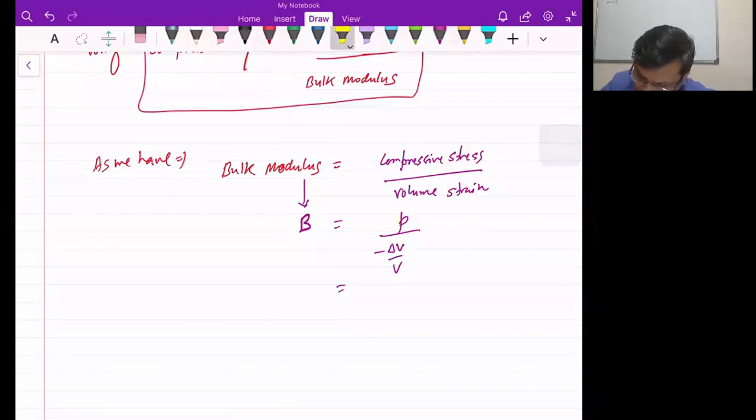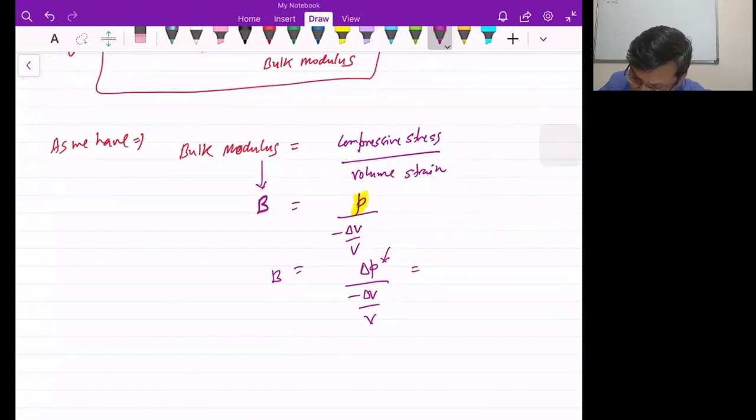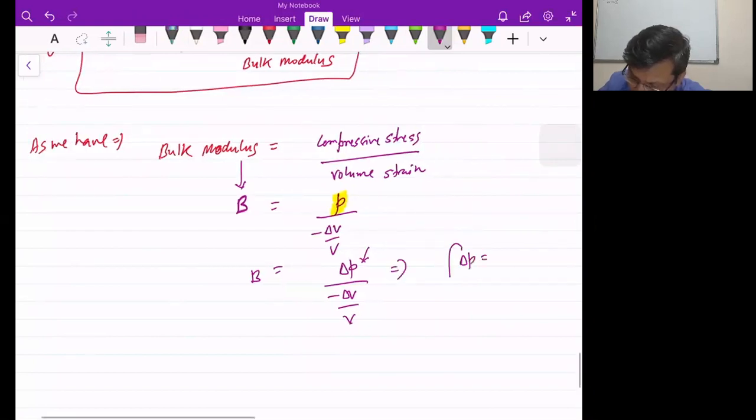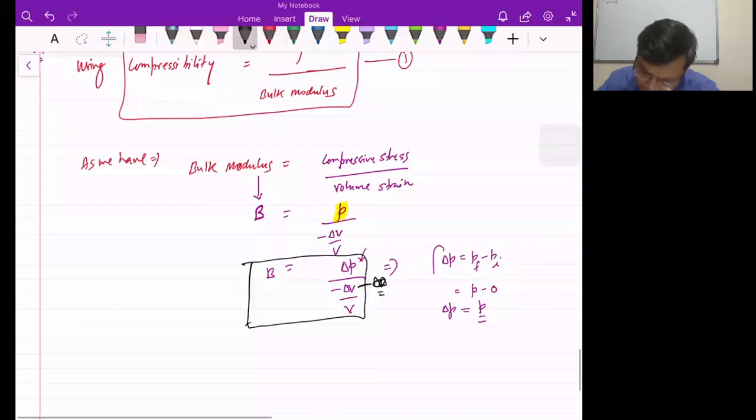The bulk modulus is the same as the volume of stress over the volume of stress. If delta P is used, then if delta P is written as P here, because what is delta P - final pressure minus initial pressure. So if final pressure is P and initial pressure is zero, then in this condition delta P will be considered P. But this expression is better to use. This is the theory behind it.